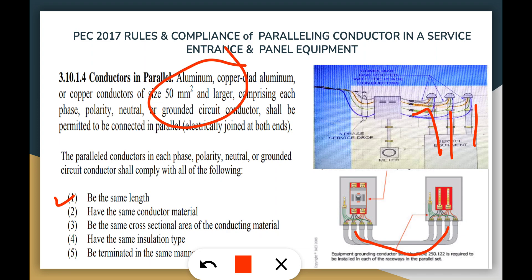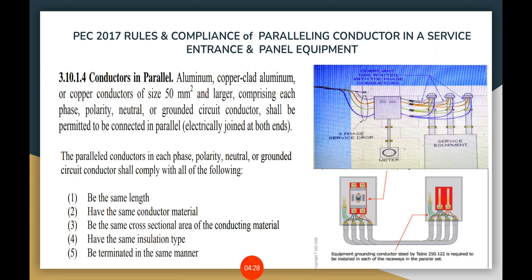This is to have equal current-carrying capacity of wires per phase. Also, the same insulation type and the same termination type must be used throughout. For conduit types, all must be the same — all PVC or all RMC throughout. No combination of PVC and RMC conduits in a single set of parallel conductors, because conduit material significantly affects impedance.